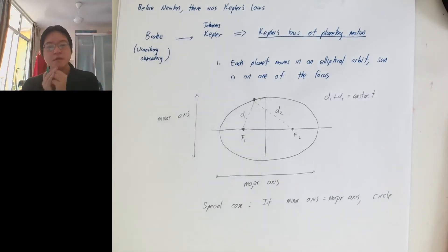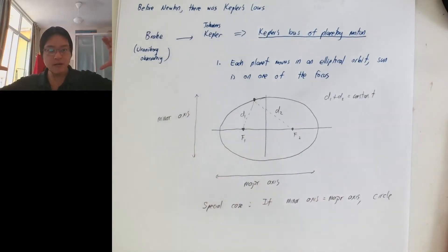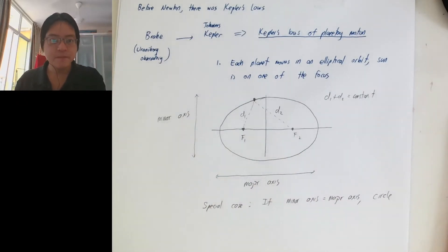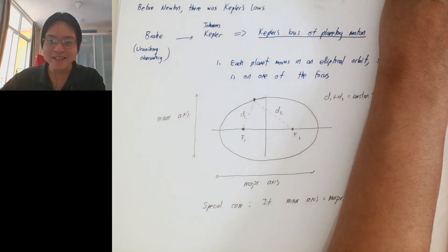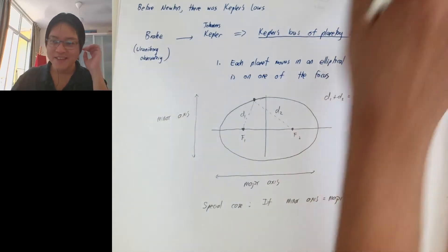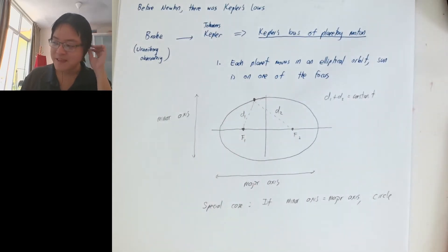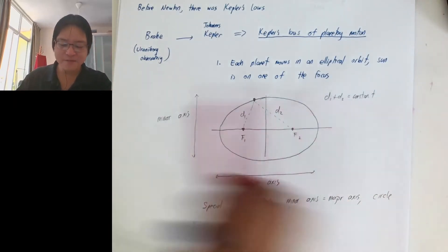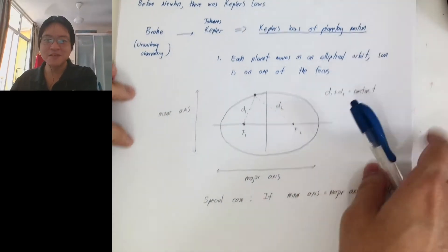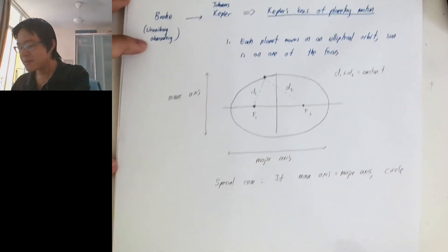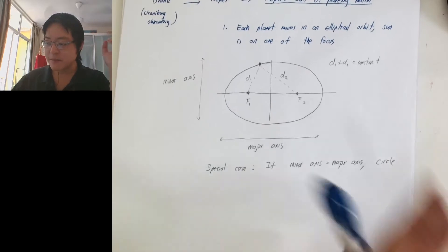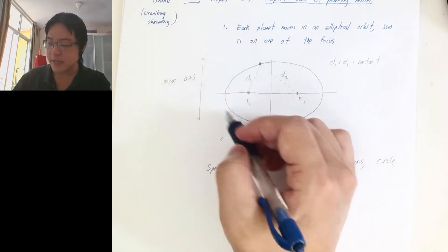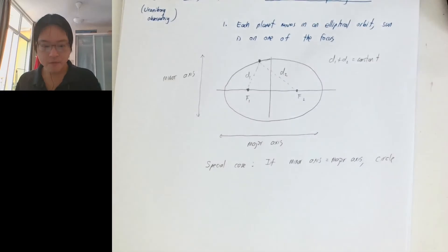For other orbits, the major axis may be much longer than the minor axis. His bladder exploding is a more accurate description of how Brahe died — we can look at Wikipedia. This was the story told to me by my lecturer when I learned it, so now I'm telling it to you. So this is Kepler's first law: the motion of the planet follows the shape of an ellipse.